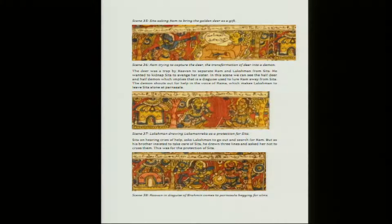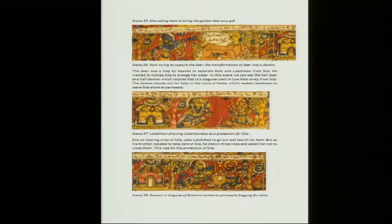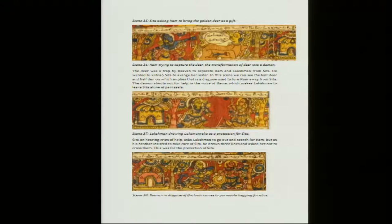In scene 37, Lakshmana draws the Lakshman Rekha as a protection for Sita — it is a mysterious element, a line that can fend someone off like fire. Sita, on hearing the cries for help from Rama, asks Lakshmana to go out and search for Ram. As his brother insisted on taking care of Sita, he drew three lines and asked her not to cross them — this was for the protection of Sita.